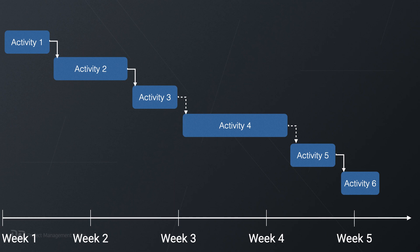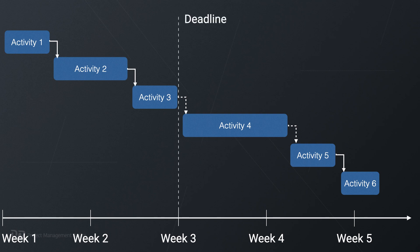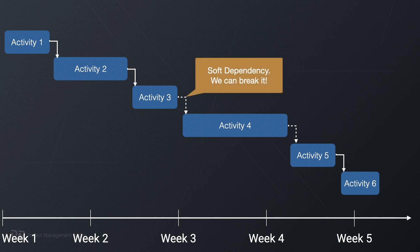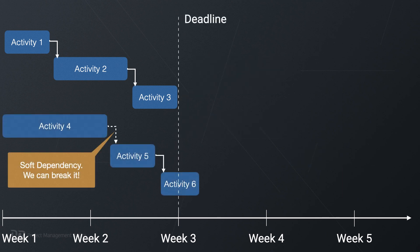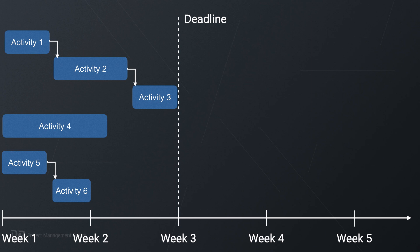In an ideal world, you want to run a project as one long sequence of activities or tasks. You don't want to do work in parallel because it adds risks and communication overhead. But in the real world, product owners want their product, service, or result as soon as possible. That's why they insist on doing work in parallel as fast as it practically can be done, so you break down the sequence at points where you have discretionary dependencies and can work in parallel.